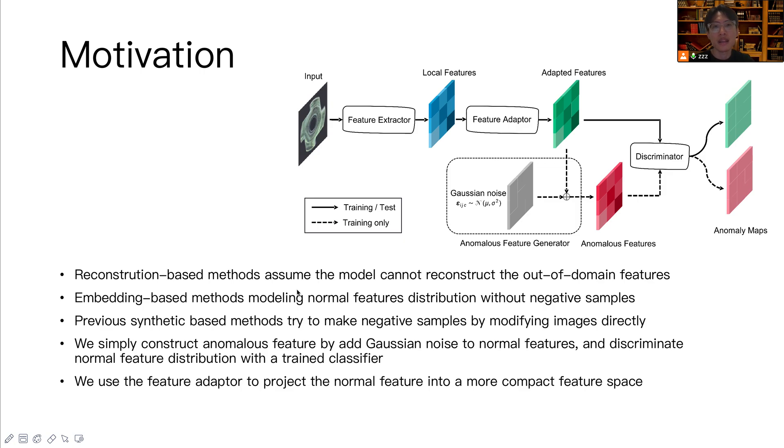The embedding-based method tries to encode the normal samples into a compact normal feature space, and tries to model such distributions without negative samples. Since negative samples are unseen, it cannot guarantee the abnormal features are far from the in-domain distribution.